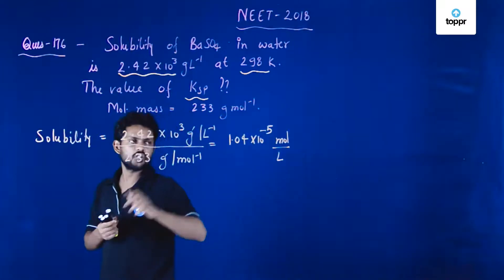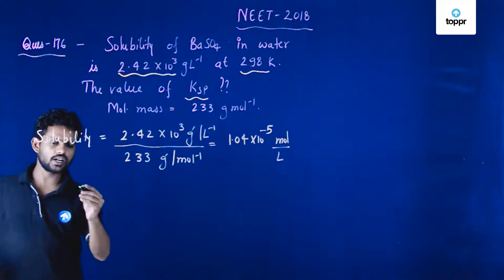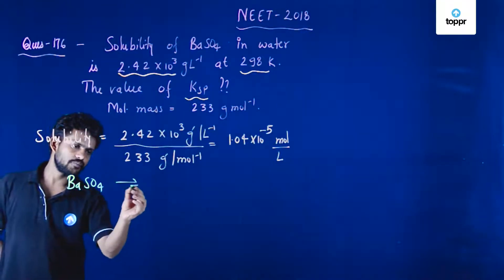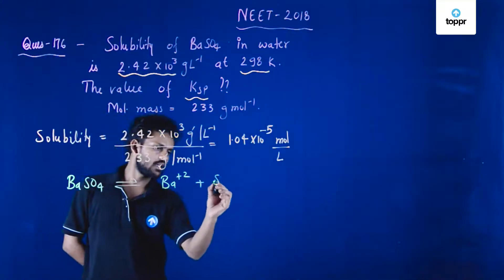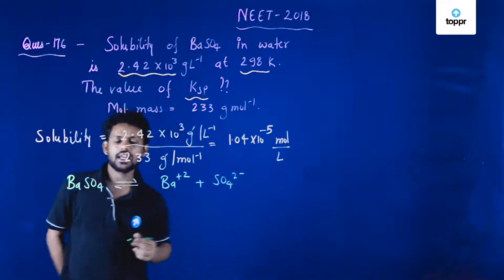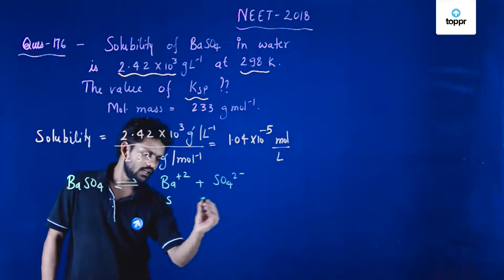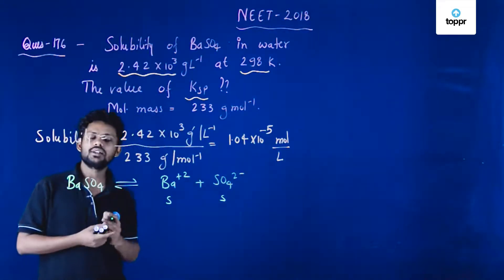This is the solubility in moles per liter. Now, if you look at the reaction, barium sulphate dissociates to give a barium cation plus a sulphate anion. At equilibrium, after the solubility is reached, the concentration of each ion is S.